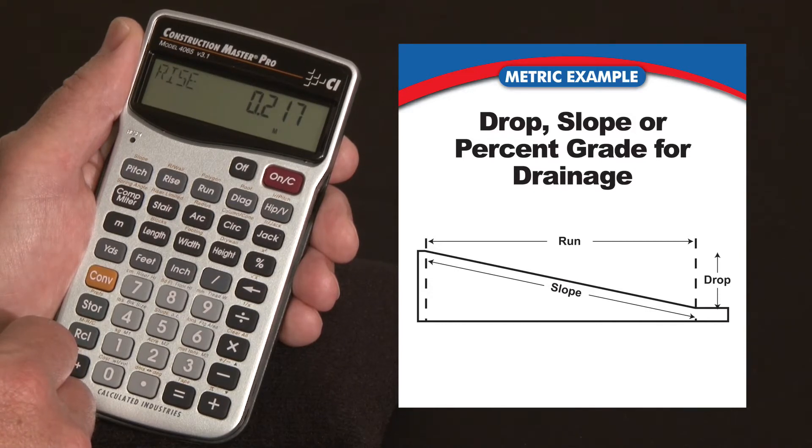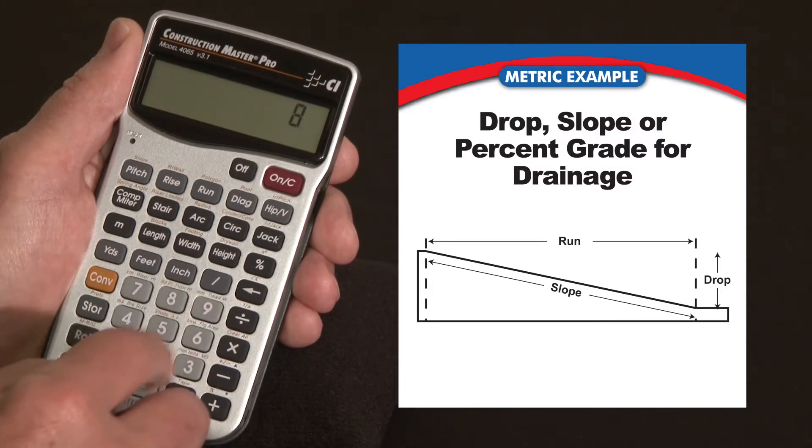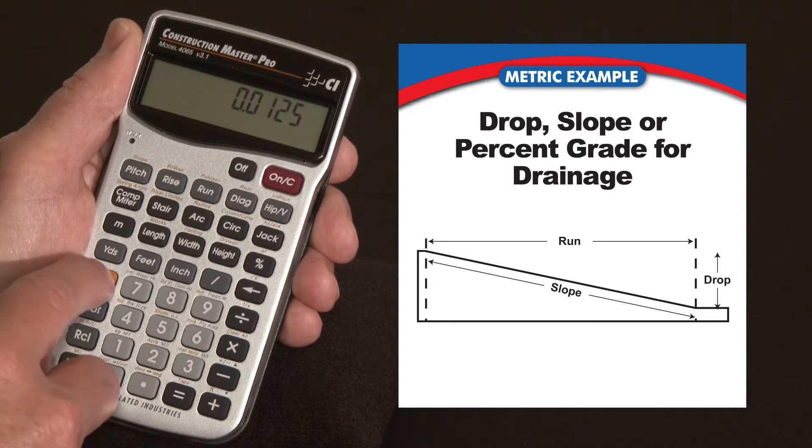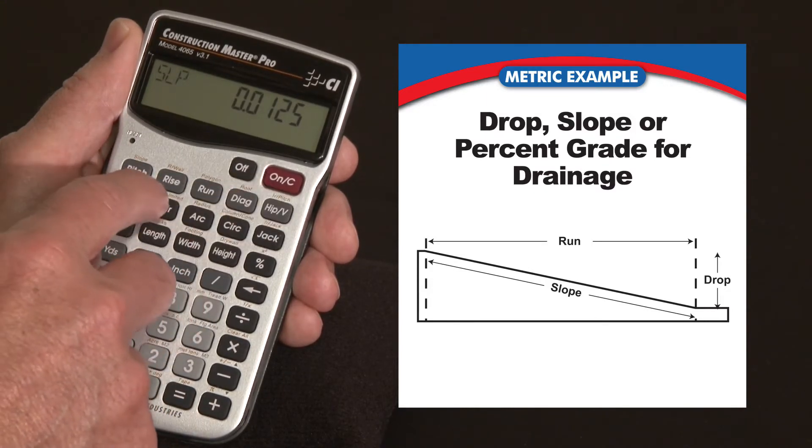And maybe that doesn't align with the edge of the curb or maybe there's an obstruction in the way and you don't want to go that deep. So let's look at it with a 1 to 80. We'll go 1 divided by 80, hit convert, enter that as my slope. Now the run of 13 meters, that's still in there, so we don't need to touch that.